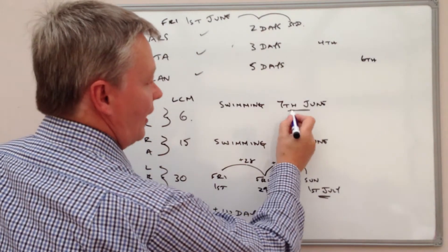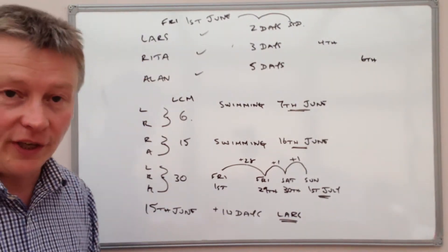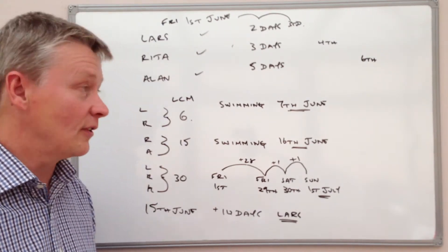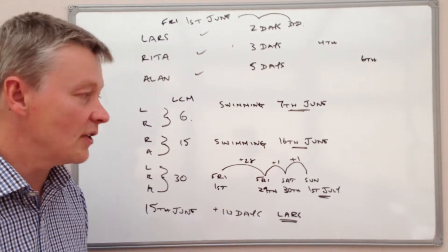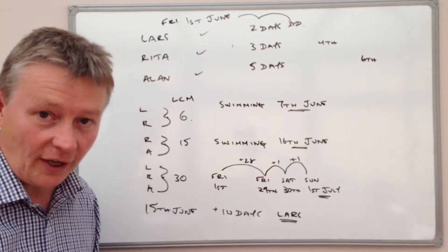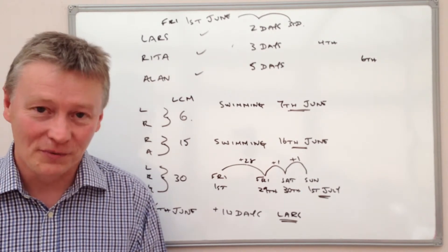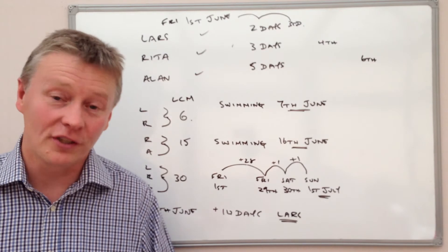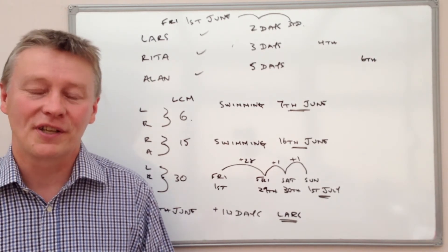So you've got four answers: the 7th of June, the 16th of June, the 1st of July, and Lars will go swimming on the 15th of June. I'll put the question into the description box and add a few comments. It's quite a good question for dealing with LCMs because it gets you to think about calendar dates and how LCMs can work in practice. Please subscribe to the YouTube channel and visit mathsrap.co.uk — there is a quick test on lowest common multiples and highest common factors you can download. Please add a comment below and I'll look forward to seeing you in the next video.